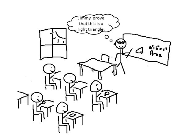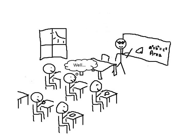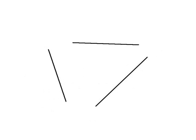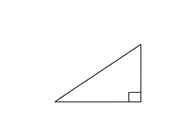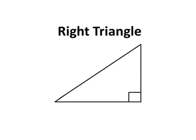I mean, seriously, it's like your teacher asks you, Jimmy, I want you to prove that this is a right triangle. And so you tell your teacher, well, okay, it has three lines, they're all connected, and one of them has a right degree angle, so it's a right triangle.